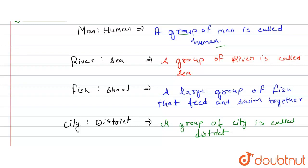However, fish and shoal cannot be found in the shoal. The group of fish is called sea. In city and district, the group of cities is called district.